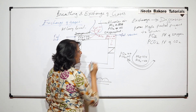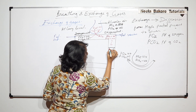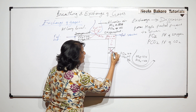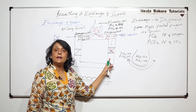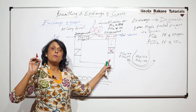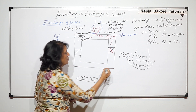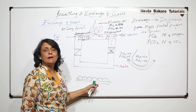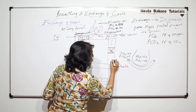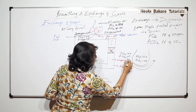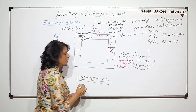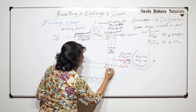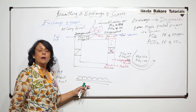This oxygenated blood travels via the pulmonary veins to the left atrium of the heart. The left atrium receives oxygenated blood and passes it to the left ventricle. From the left ventricle, this oxygenated blood is pumped through the aorta and arteries to supply the whole body including the tissues. The oxygenated blood has PO2 of 95 and PCO2 of 40.